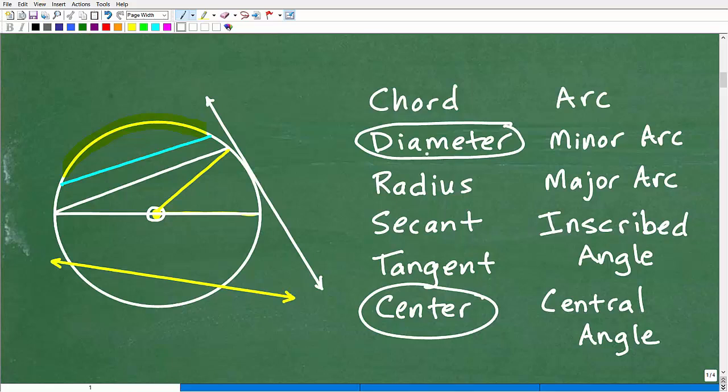So now that we got the diameter down, let's talk about the radius. Diameter and radius, these are pretty common terms with circles. Most people probably kind of know these. But let's talk about this. So the radius starts from the center and goes out to the edge. So half of the diameter is the radius, or twice the radius is the diameter. So this right here would be the radius.